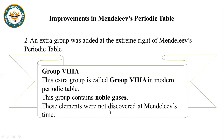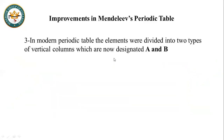One of the improvements to Mendeleev's Periodic Table is that groups were converted into A and B subgroups.